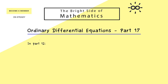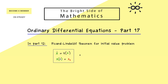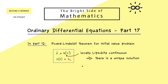We can immediately start by recalling the Picard-Lindelöf theorem from part 12. There we discussed the initial value problem given by an autonomous system, which simply means that the function v on the right does not depend on the time variable. If v is locally Lipschitz continuous, we have a unique solution of this initial value problem, as proven in part 12.